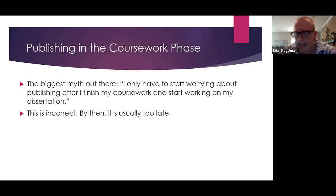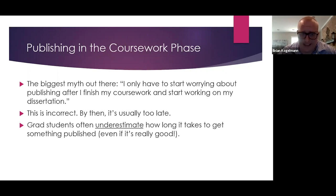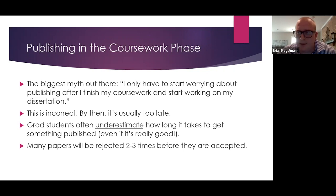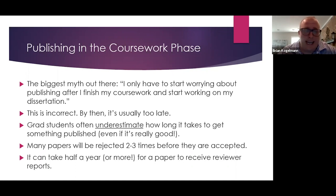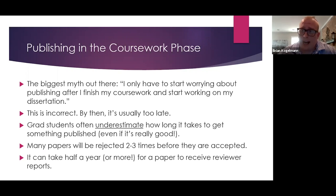I think this is incorrect. If you wait till your third or fourth year to start publishing, it's going to be a little too late. The reason is that grad students often underestimate how long it takes to get something published — even if your paper is really great. Many papers will be rejected two to three times before they're accepted. I almost never get anything accepted on the first try; it takes two, three, sometimes four or five attempts at different journals. Beyond that, it can take half a year or more for a paper to receive reviewer reports. My record — from the day of submission until I received the initial reports — was 14 months. Then I had to revise, send it back, and have it reviewed again before it was accepted. It was a two-year process. The point is that publishing takes a very long time, so it's a good idea to start right now.